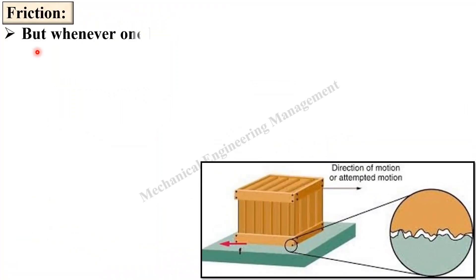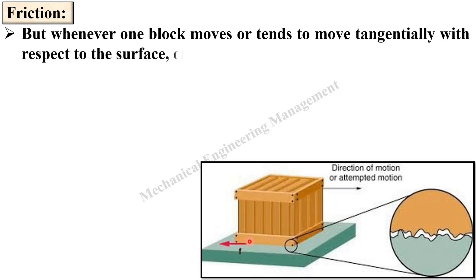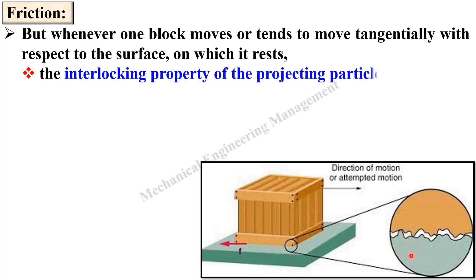But whenever one block moves or tends to move tangentially with respect to the surface on which it rests, once again one block moves or tends to move tangentially with respect to other surface on which it rests, the interlocking property of the projecting particles opposes always the motion.